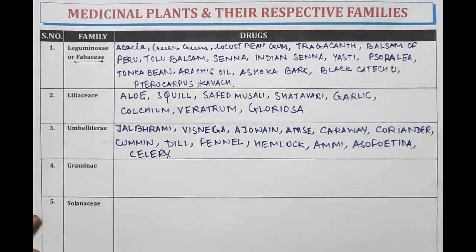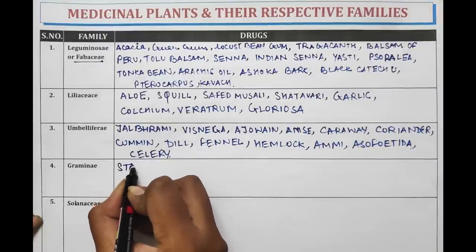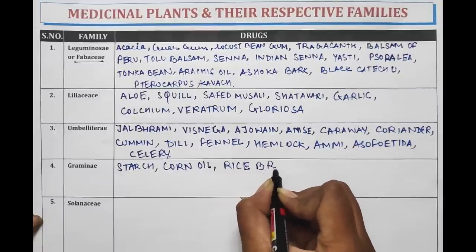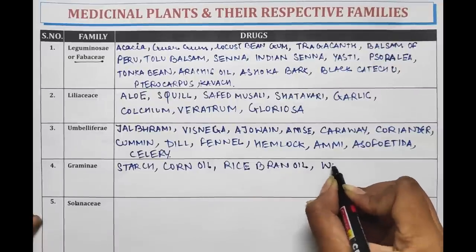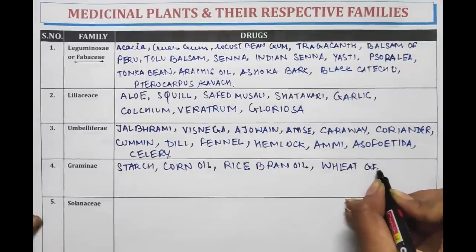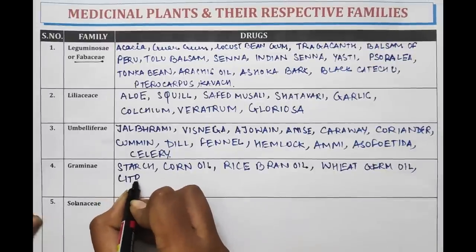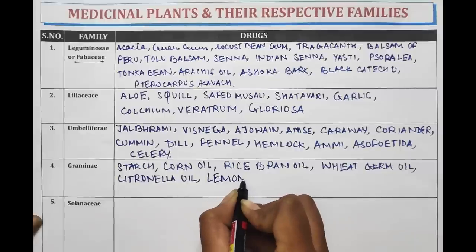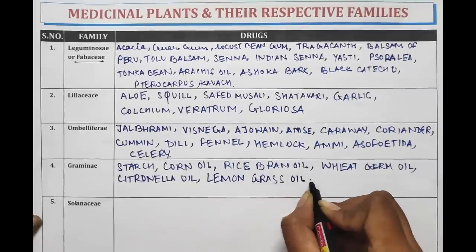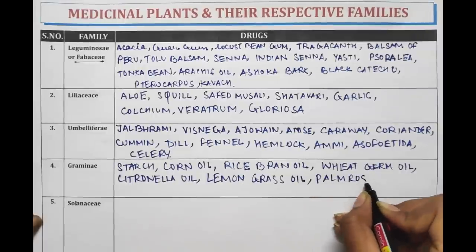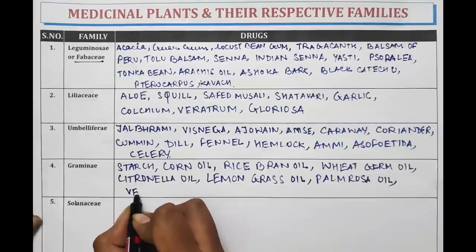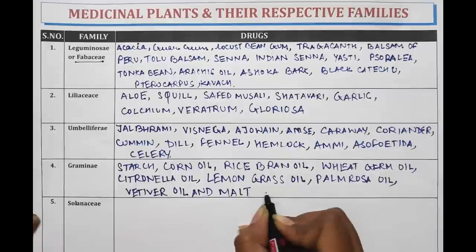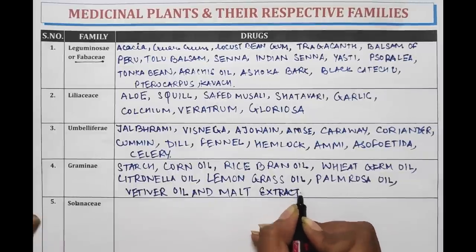The drugs belonging to Graminae family are Starch, Corn Oil, Rice Bran Oil, Wheat Germ Oil, Citronella Oil, Lemongrass Oil, Palmarosa Oil, and Malt Extract.